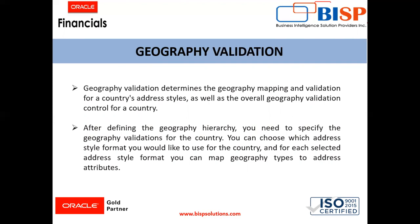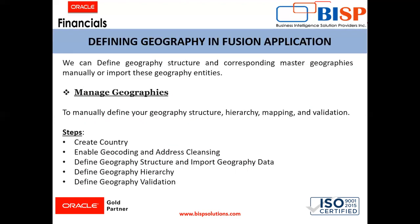So what are the steps to manage geography? We can define geographical structure and corresponding master geographies using the Manage Geographies task. We'll create the country and then enable geocoding — which is the information of latitude and longitude — and then address cleansing. Then we define the structure, import the geography data, and set up the hierarchy and validation. This way our geographies will be managed.